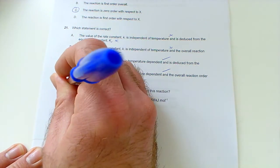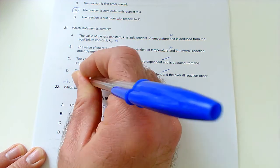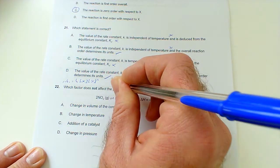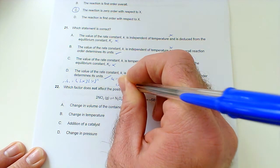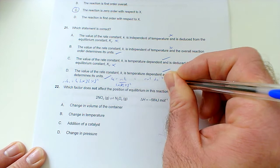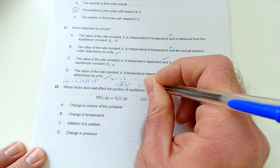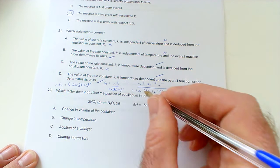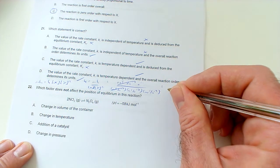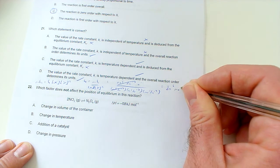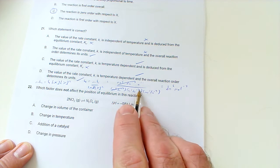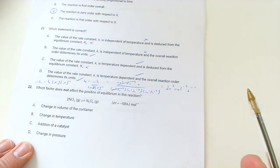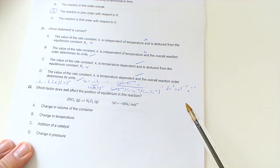For example, imagine you had a reaction where rate equals K times concentration of X times concentration of Y squared. Rate is typically mol dm⁻³ s⁻¹. You'd have mol dm⁻³ for X and mol dm⁻³ squared for Y since it's second order. After cancellation, you're left with dm⁶ mol⁻² s⁻¹ for a third order overall reaction. If it was first order overall, it would be dm³ mol⁻¹ s⁻¹.